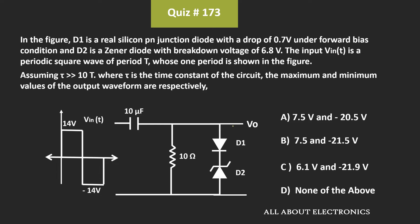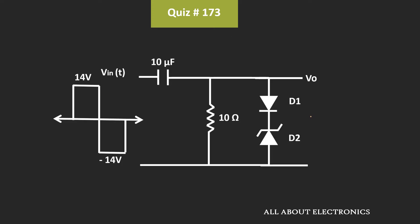If you closely look at this circuit, it is the clamper circuit. For the clamper circuit, we know that the RC time constant of the circuit should be much larger than the time period of the signal. And in fact, here we have been given that the RC time constant of the circuit is much larger than the time period of the signal. So to find the maximum and the minimum value of the output waveform, let's analyze this circuit.